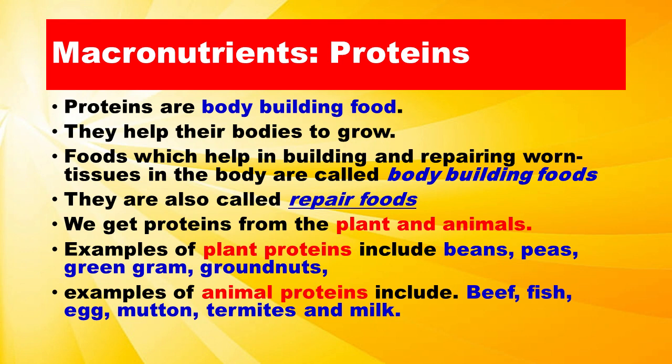Proteins are bodybuilding food. They help our bodies to grow. Foods which help in building and repairing wound tissues in the body are called bodybuilding foods. They are also called repair foods. We get proteins from plants and animals. Examples of plant proteins include beans, peas, green gram, and groundnuts.